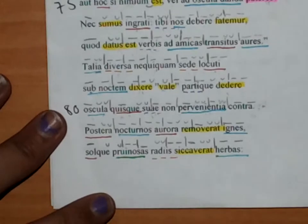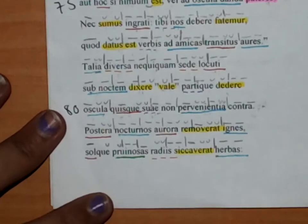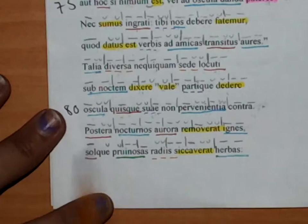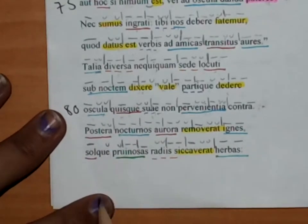And to at least kiss each other. Then they said good night and each kissed their own side of the wall and went to bed. So picking up here, line 81, postera, and here we go.